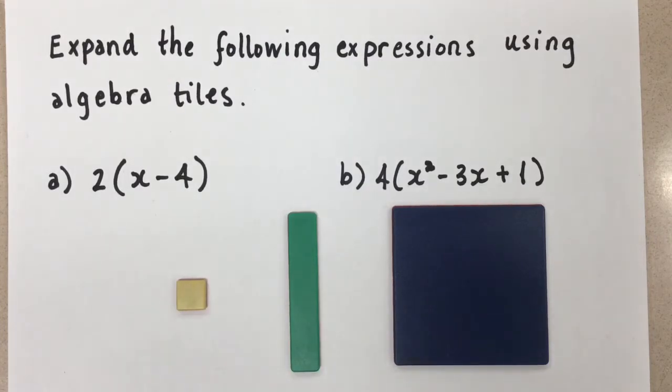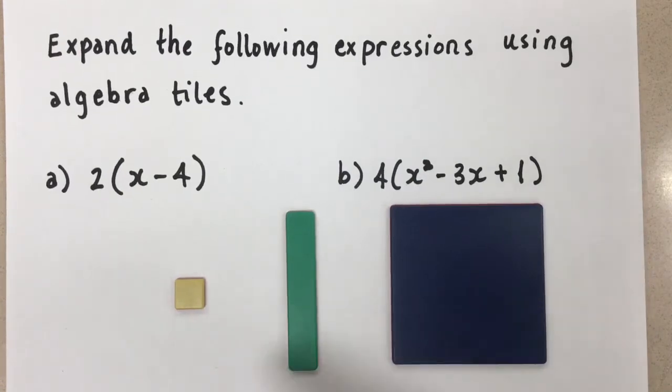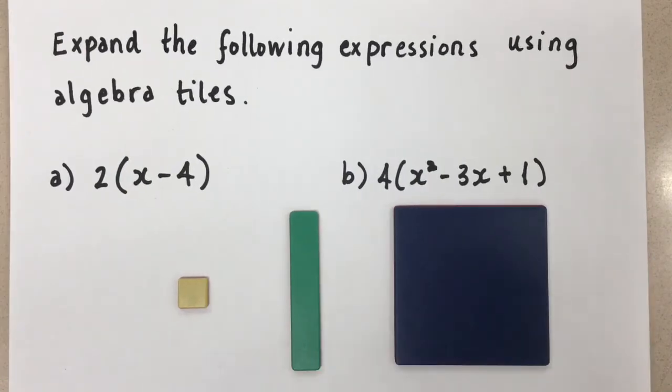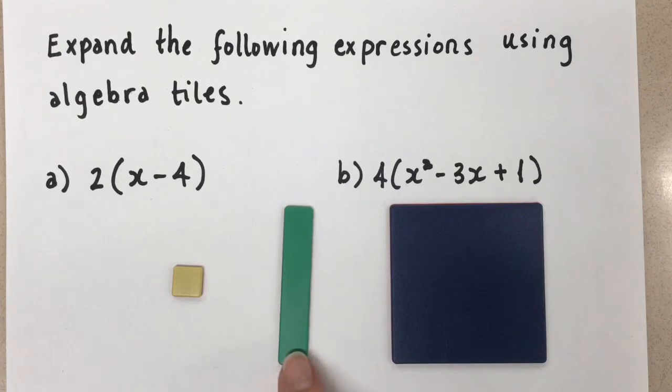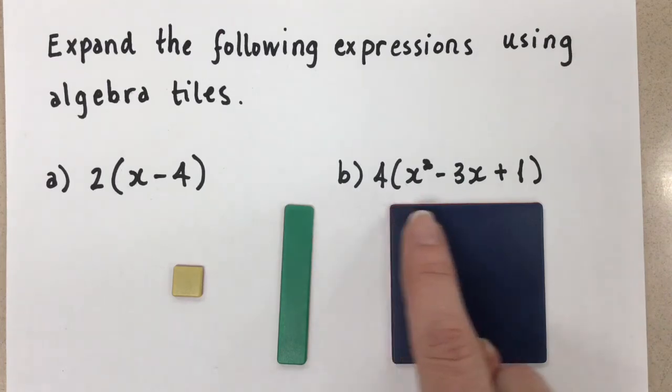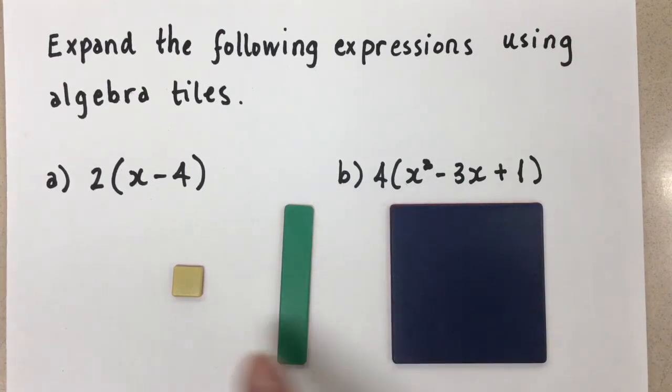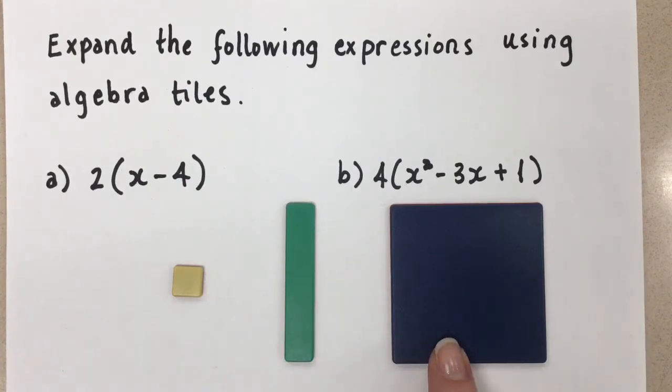So when we use algebra tiles, just as a recap with our variables, we're going to use this little one as a positive 1. And this would be our x variable, assuming we don't know the length of it, so it's called x. And then this would be x times x, which is x squared. So this is a 1, this is an x, and this is an x squared.